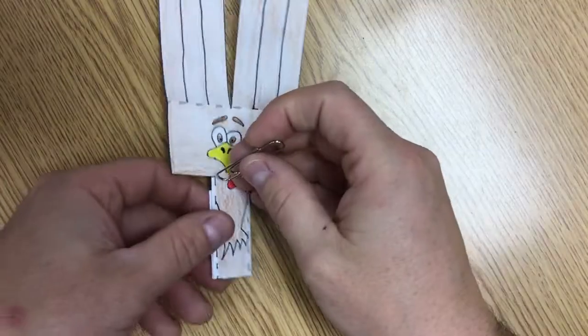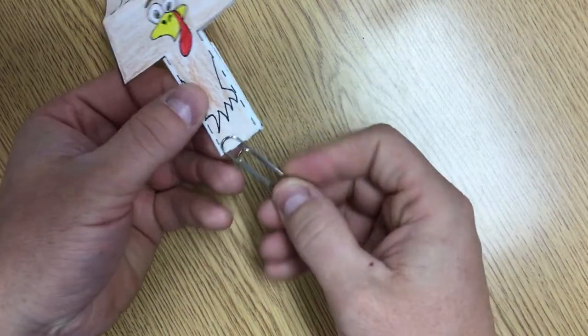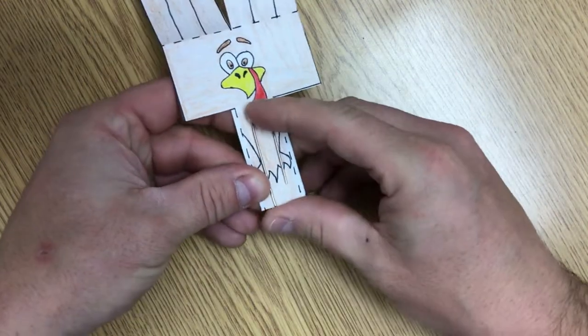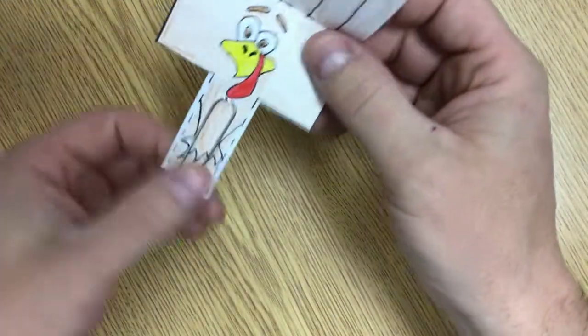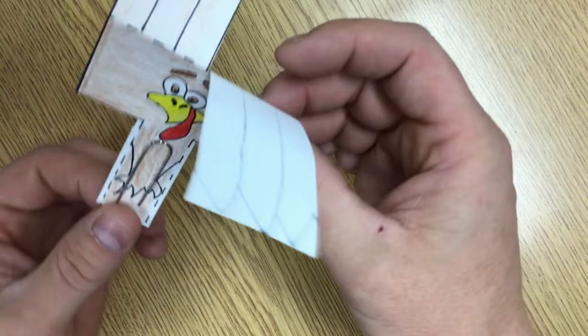The last thing my turkey copter needs before flying is a paper clip that I can slide onto the bottom. It holds everything together nicely. And now I'm ready to drop this thing and see if it flies. Let's give it a shot.